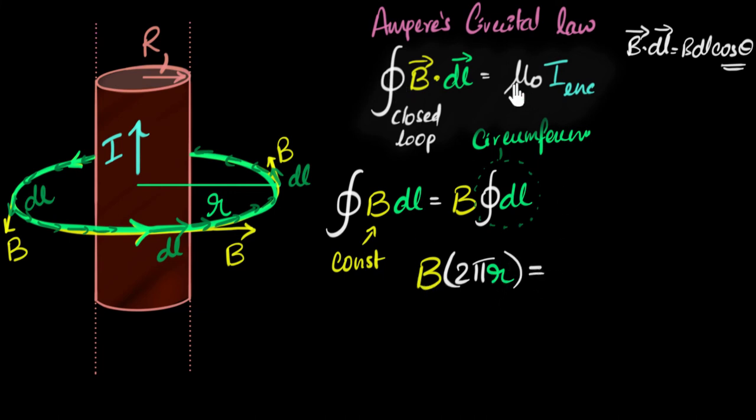Okay. Now let's look at the right hand side. What is the right hand side? We get mu naught times i enclosed. What is i enclosed? It is the current that is enclosed by the loop. And you can see that the entire current I is enclosed by the loop.